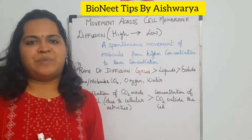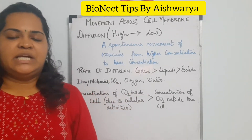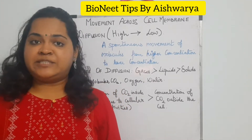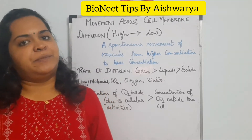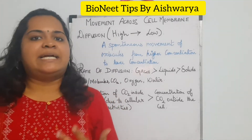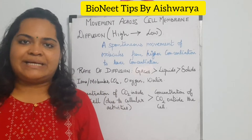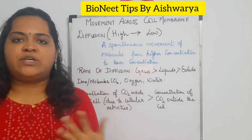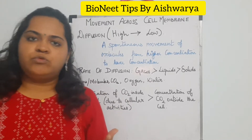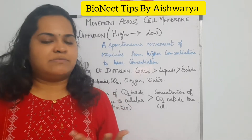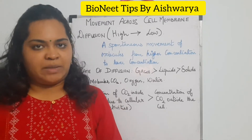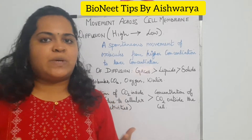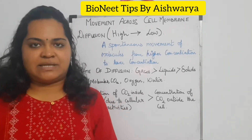Hi friends, welcome to Bionic Tips. You all have studied in the chapter 'Fundamental Unit of Life' that the plasma membrane is a selectively permeable membrane. It means that it allows only certain particles to enter and leave out of the cell. Molecular movement in many organisms, such as unicellular organisms like amoeba, is very helpful in obtaining nutrients as well as for the exchange of gases and excretion.